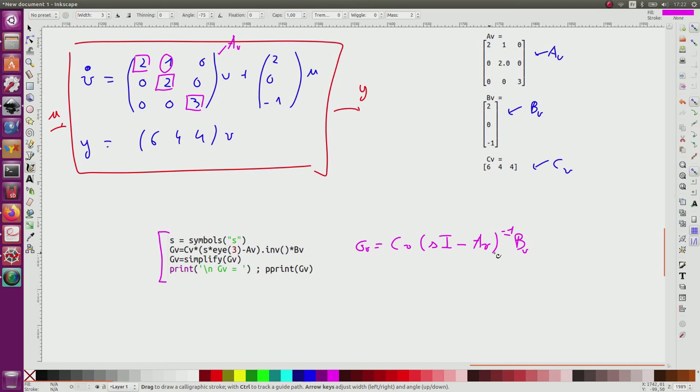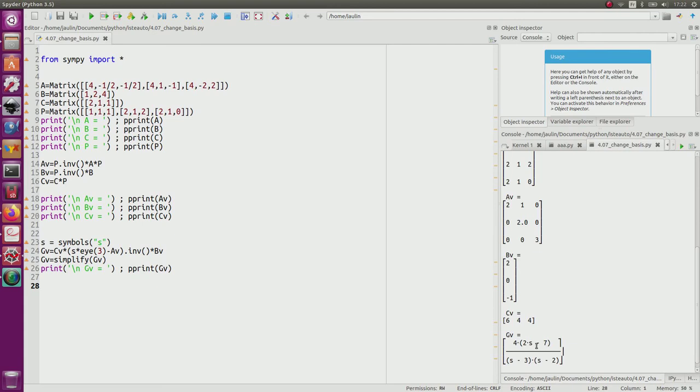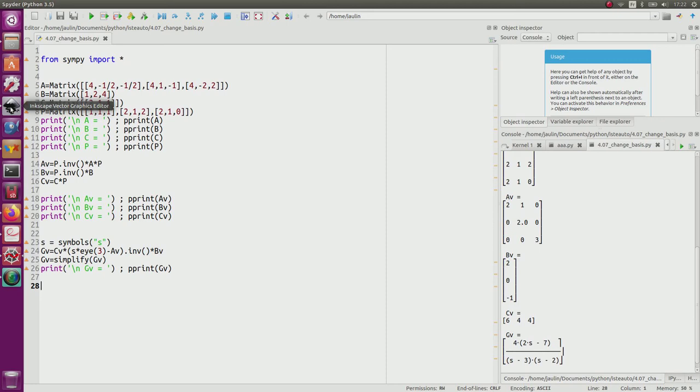I can compute with respect to the matrices in the V space, but I would obtain exactly the same result in the X space. I will simplify the expression and I will print it. So if I run it, I obtain this result given here. So equivalently, I get that G of S is equal to 12 divided by (S minus 2) minus 4 divided by (S minus 3).